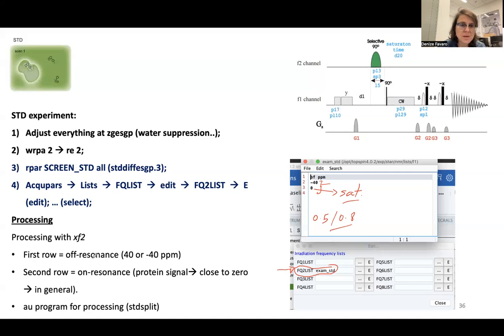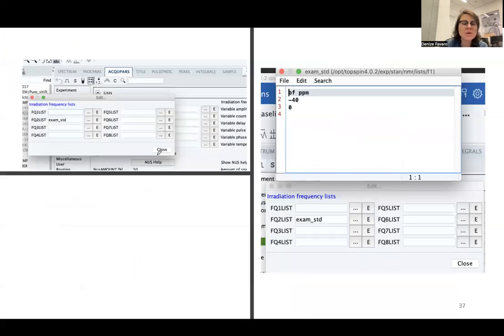This is a summary of how I adjust my ZGESGP experiment, for example, my water suppression, and then I can copy to the second one. And I can give this read button. There's screen STD underscore studio. So it's gonna load all the parameters for this pulse sequence, but I can also do the regular settings and set this experiment.